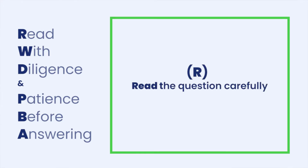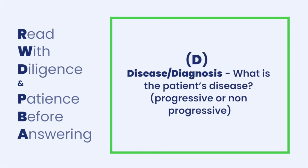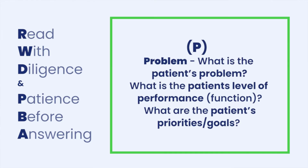R — read the question carefully. W — what is the stage of the OT process? D — disease or diagnosis. What is the patient's disease? Is it progressive or non-progressive? P — problem. What is the patient's problem? What is the patient's level of performance or function? And what are the patient's priorities or goals?